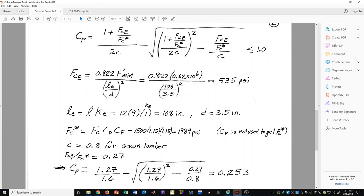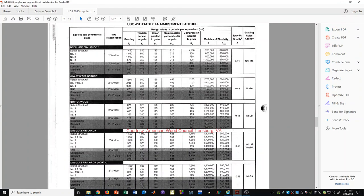Here we do need to get the table value. If we look in the supplement for Douglas fir number 1 and we look at FC, we see that it is 1,500 psi. This is for compression parallel to grain.